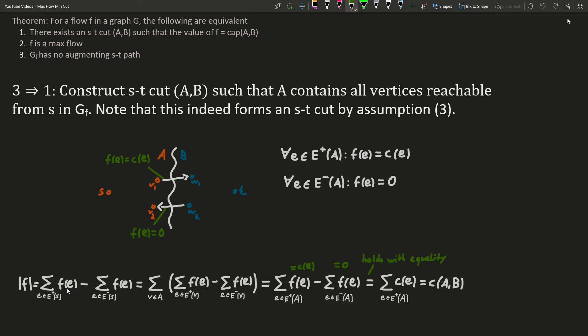So if we take another look at the inequality from the first implication, where we showed that all flows are bounded above by all cuts, we'll observe that for this particular flow and cut, the inequality holds with equality. As all edges sticking out of A are fully saturated, and all edges sticking into A have zero flow. So we indeed have constructed a cut with capacity equal to the value of the flow.